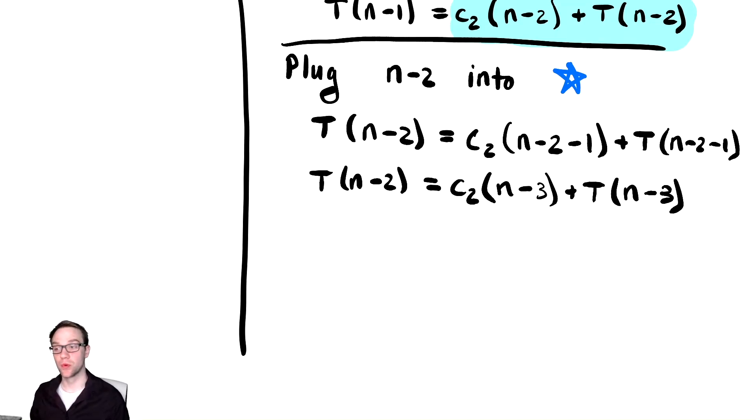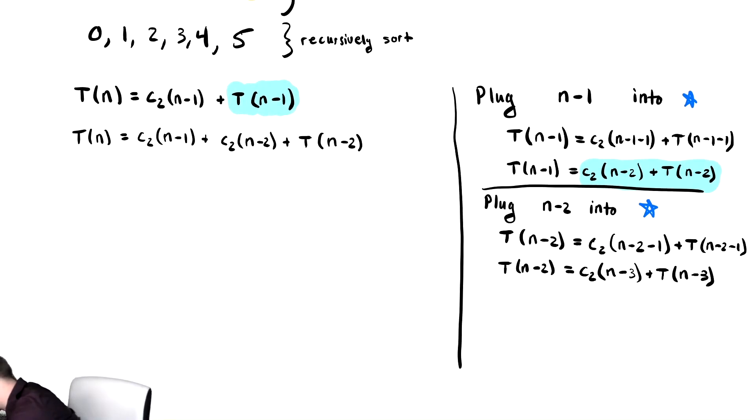We are then going to replace the n minus 2 in the equation with this new right-hand side. We will replace this mint green thing with this right-hand side over there. We get T of n is equal to C2 times n minus 1 plus C2 times n minus 2 plus C2 times n minus 3, according to the stuff I highlighted in light green, plus T of n minus 3.